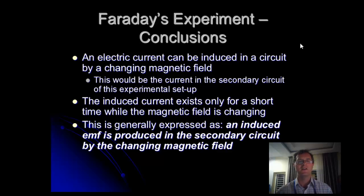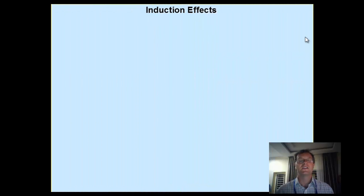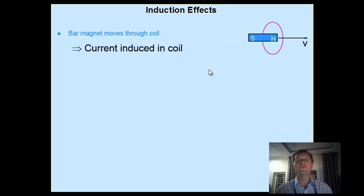Next lesson we'll talk more about that, but let's look at what these basic findings help us find out — the idea of induction, something inducing the flow of current. There are a number of ways to induce the flow of electricity. Number one: if a bar magnet moves through a coil, current is induced in the coil. So if I have a bar magnet and I move it through the coil, electric current is induced. I have to be moving the magnet — that's very important.